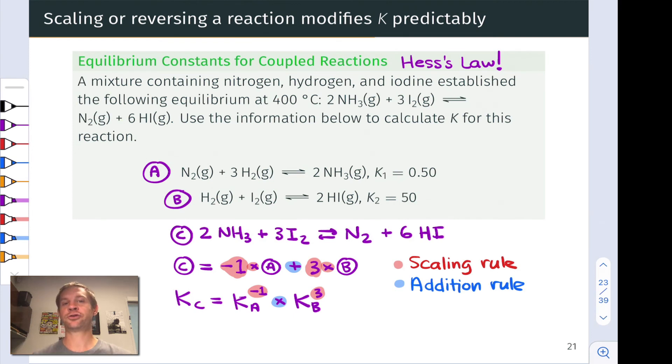We also need to incorporate exponents with the Ks because we've scaled both reactions A and B. In scaling reaction A, really reversing it is tantamount to multiplying it by negative 1, we're going to raise K sub A to the negative 1 power.